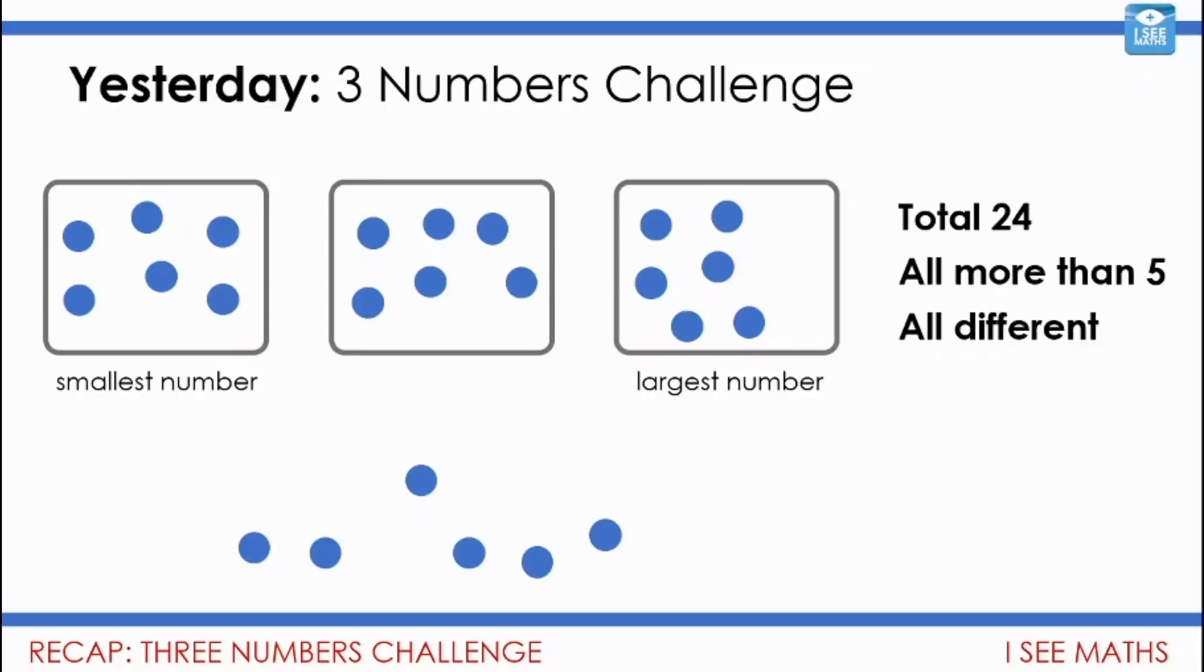You just have to think what do you do with the remaining six? Well, if I put one in the middle box and five in the right hand box then I would have six, seven and eleven. Now adjusting from there, if I move it across from the largest number to the middle one then I will have six, eight and ten. I could still move another one from that largest number, but if I put it as part of the smallest number then that would become seven, eight and nine. And there were our three possible answers.